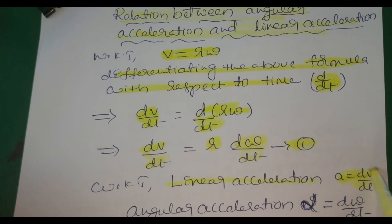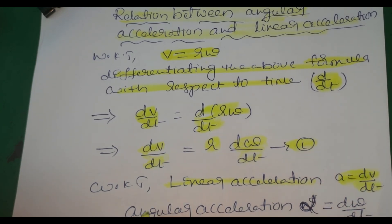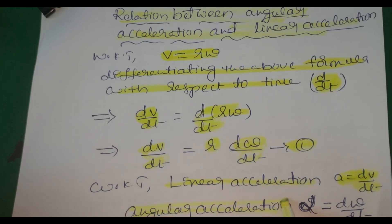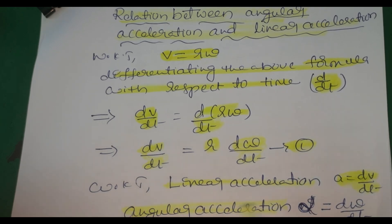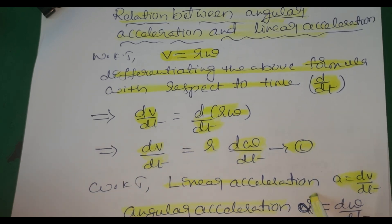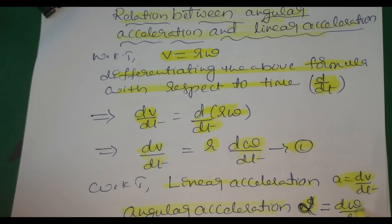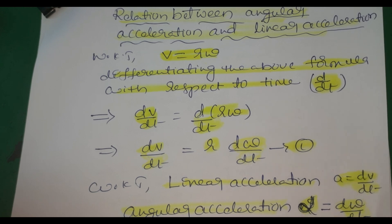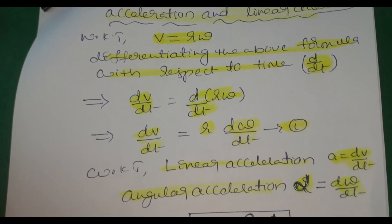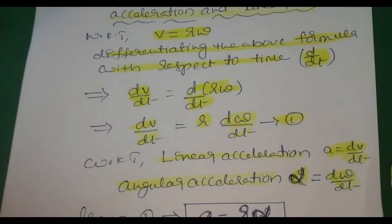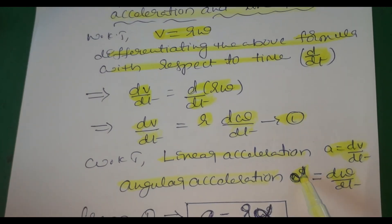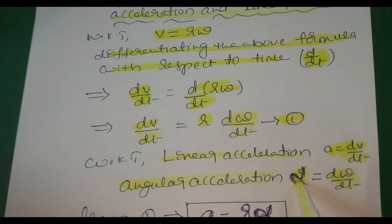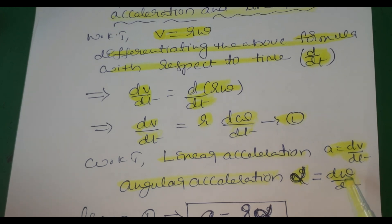We know that linear acceleration a is the rate of change of velocity, so a equals dv/dt. The rate of change of angular velocity is called angular acceleration, denoted by alpha, which equals d omega by dt.